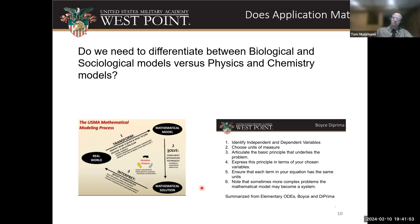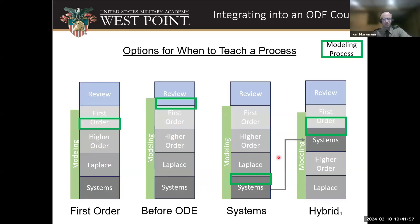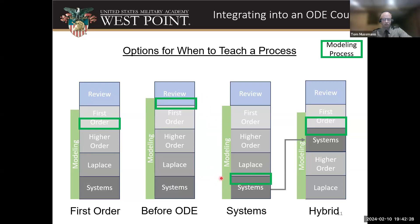Suppose you have a modeling process you want to teach your students. The modeling process is outlined in green on this slide. The next four slides highlight four different ways to integrate this process into a course. First, teaching modeling during the first-order ODE unit — maybe at the start, maybe at the end. Second, teaching the process even before starting ODEs. Third, teaching the process at the end of the ODE class when covering systems. And fourth, a hybrid approach, which I'll discuss more shortly.